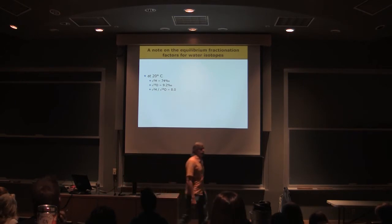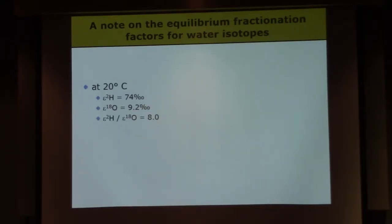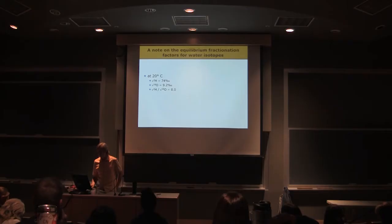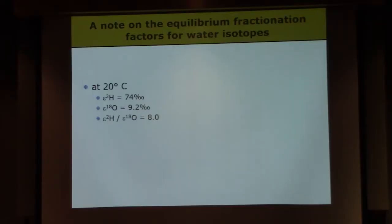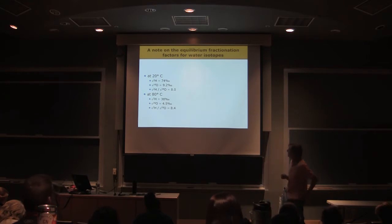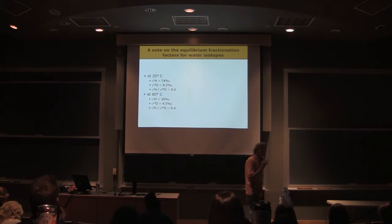Let's start with equilibrium fractionation. Here's an important observation. At 20 degrees C, these are the epsilon values, the equilibrium fractionation factors for hydrogen isotopes and oxygen isotopes in that liquid-vapor phase change reaction. If you take those two numbers and divide them, you get a ratio of 8. This is somewhat temperature sensitive. At 80 degrees C, the ratio goes up to about 8. If you come down to freezing, it's more like 7.2 or 7.4. But the ratio of those two fractionation factors is about 8.